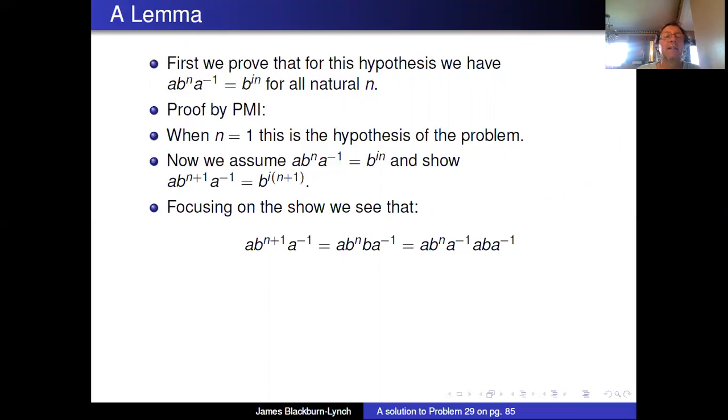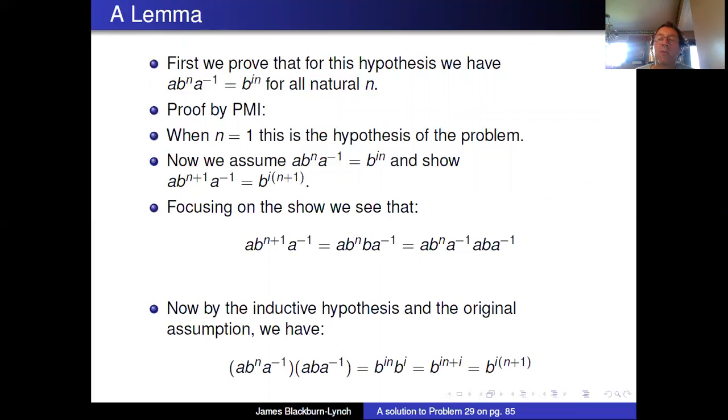The reason I'm doing that is now I get to use my inductive hypothesis. Notice my inductive hypothesis is about a times b^n a^(-1). And that is what I have in my first three. I put them in parentheses so you can see them. The first three are inductive hypothesis and the second three is the hypothesis of the original theorem.